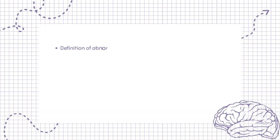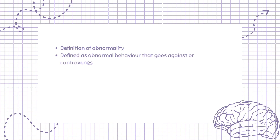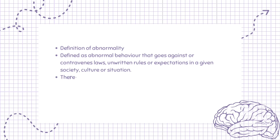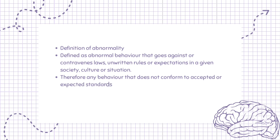Deviation from social norms is a definition of abnormality, defined as abnormal behavior that goes against or contravenes laws, unwritten rules, or expectations in a given society, culture or situation. Therefore any behavior that does not conform to accepted or expected standards is abnormal.